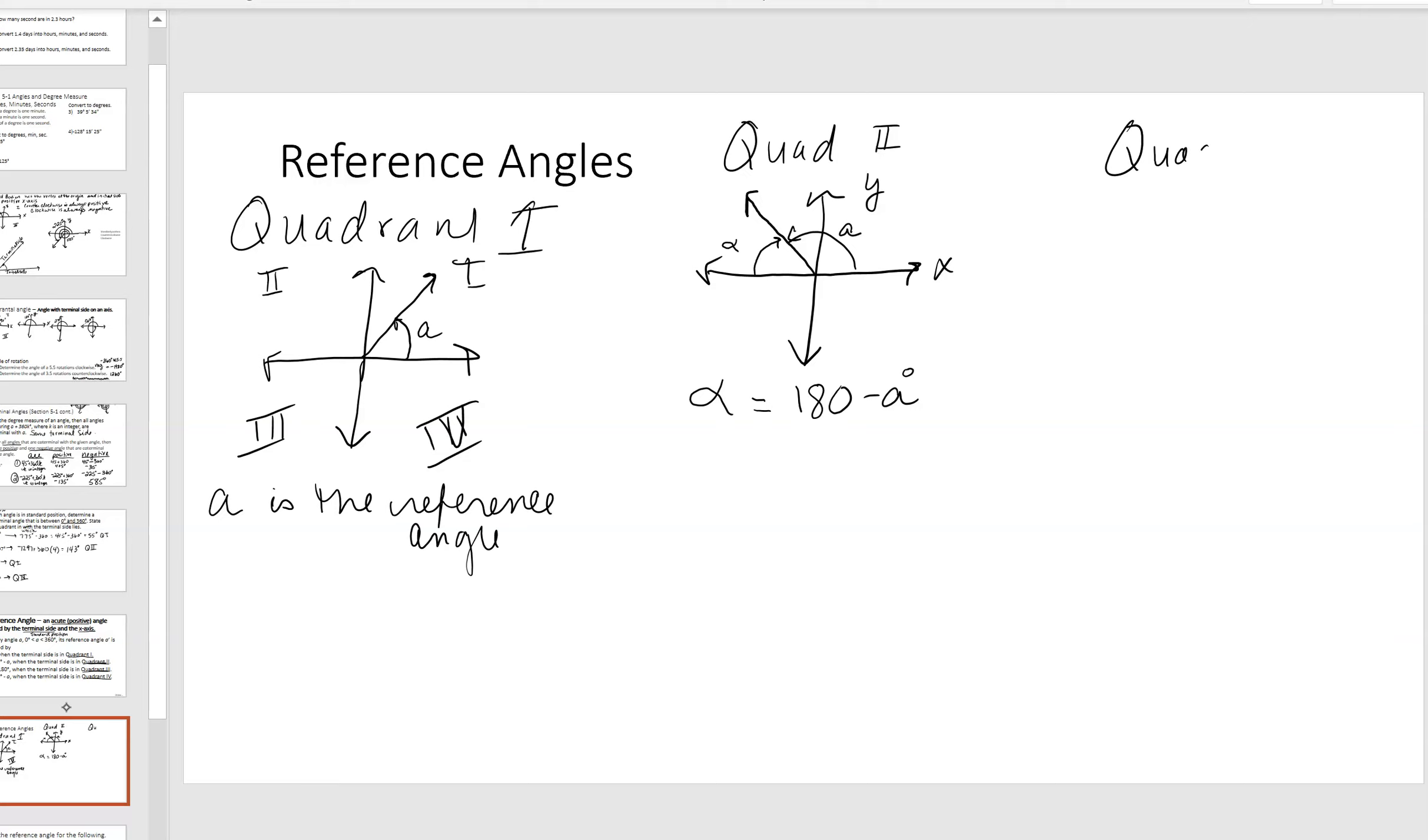When we have quadrant three. Here's your coordinate plane. Here is our angle. Here is our angle. Here is a. Your reference angle. Remember, it's going to be the acute positive angle that is formed by the terminal side and the x-axis. So, in this case, alpha is going to equal a minus 180. Because, if a is positive, a is going to be greater than. Now, the difference here, you have to remember when angles are negative, the reference angle is always considered positive. Always, always.